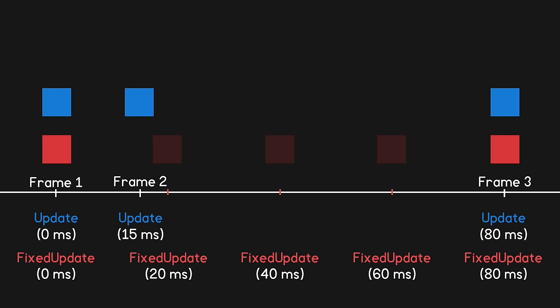All of these extra fixedUpdate calls might seem like a waste of processing power, since the player only sees the result when the frames are actually drawn. However, when dealing with physics, these extra calculations are necessary. If there's a wall we want to collide with but the frame rate drops, we still need to calculate all the in-between steps so that the object doesn't simply pass right through it.